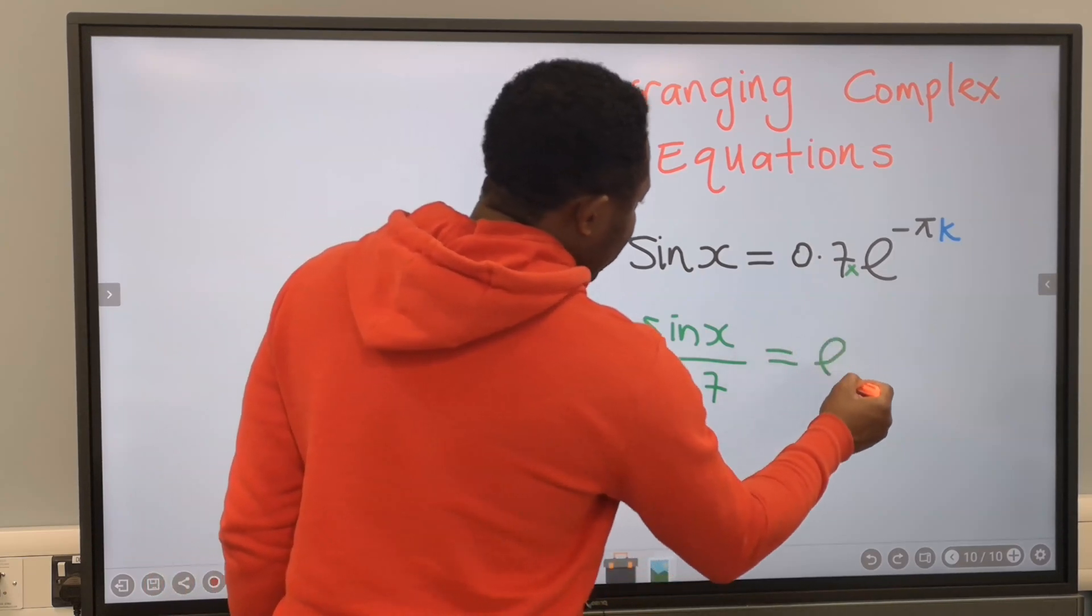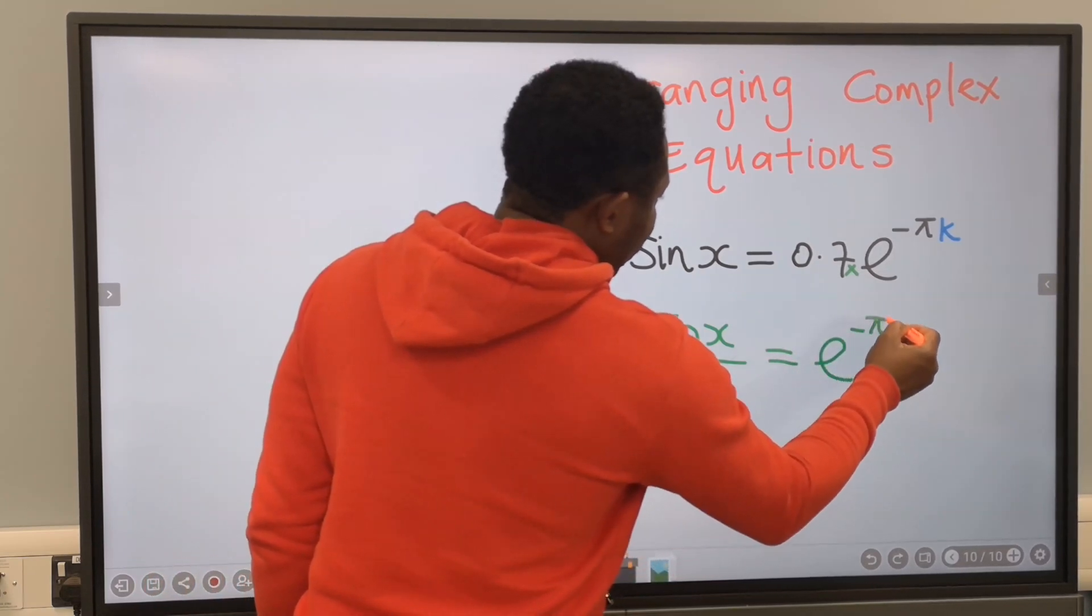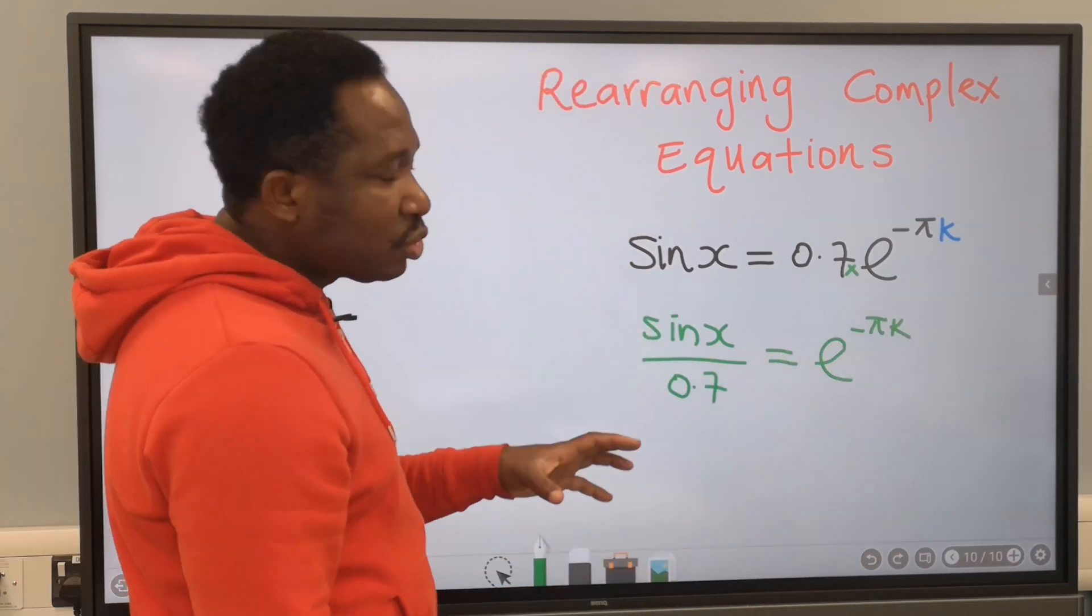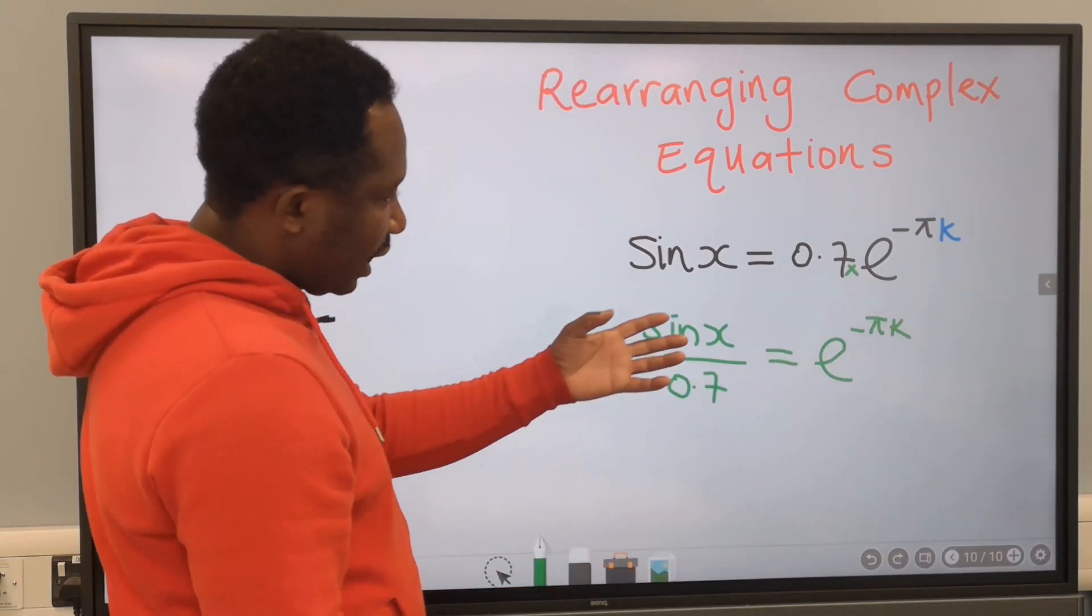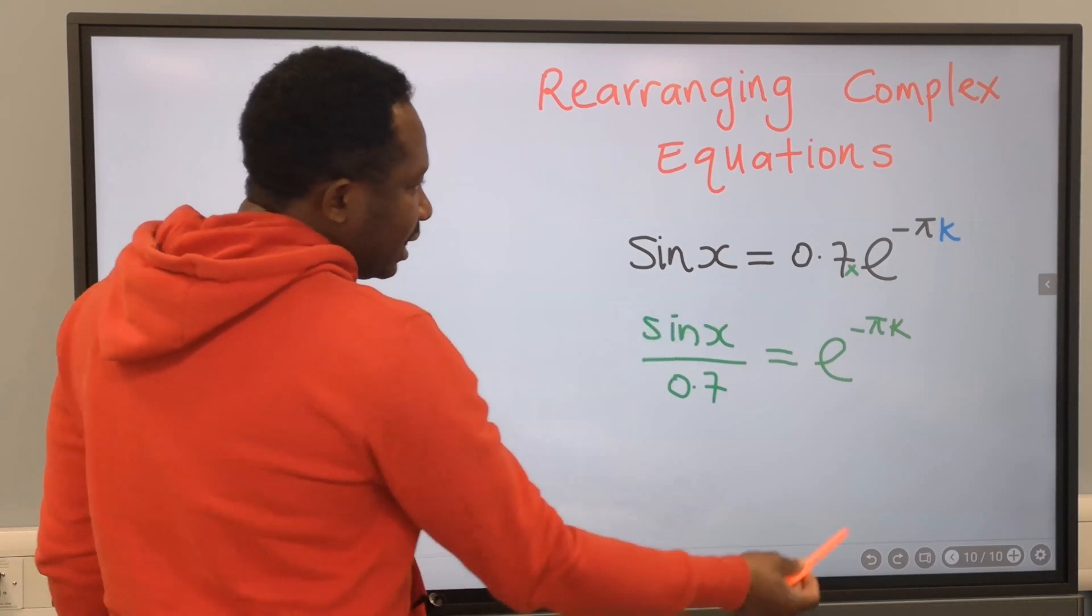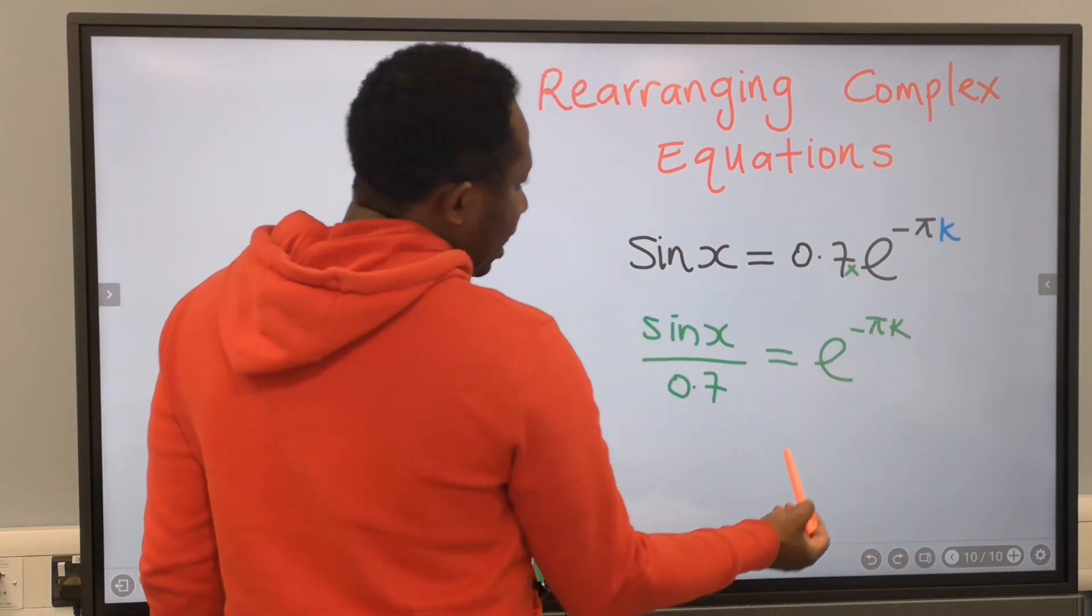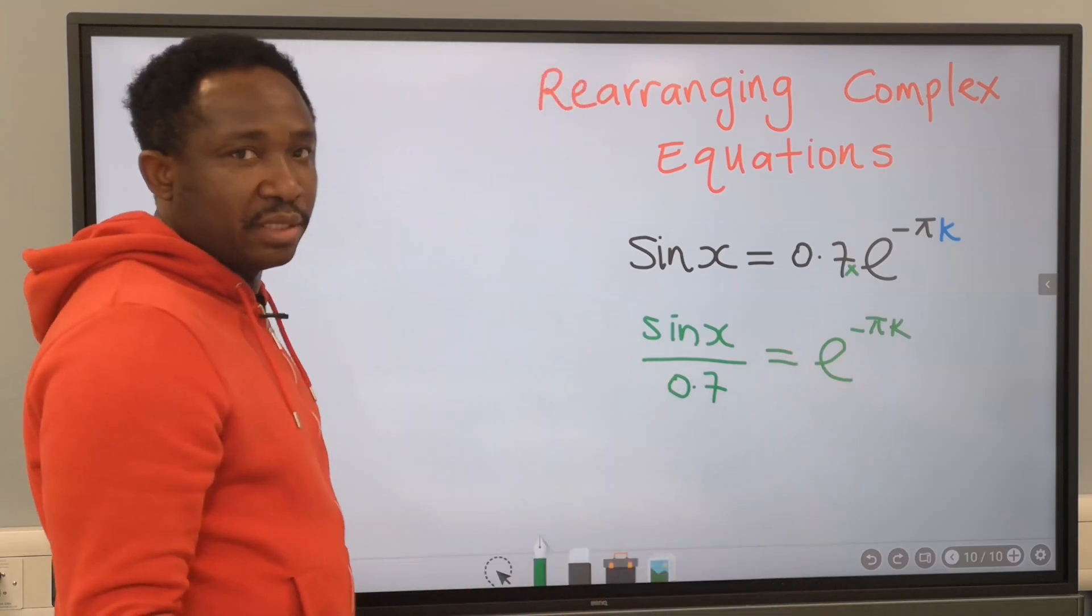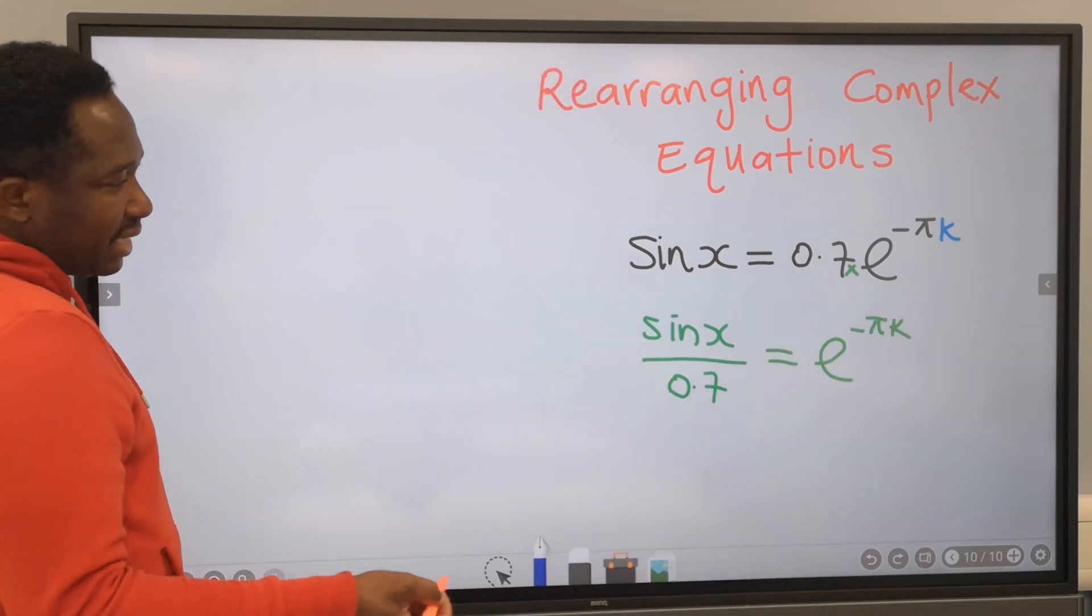Now we have e to the minus pi k on the other side. What we actually want is to isolate k. But the k we want to isolate is enclosed or held by the exponential.